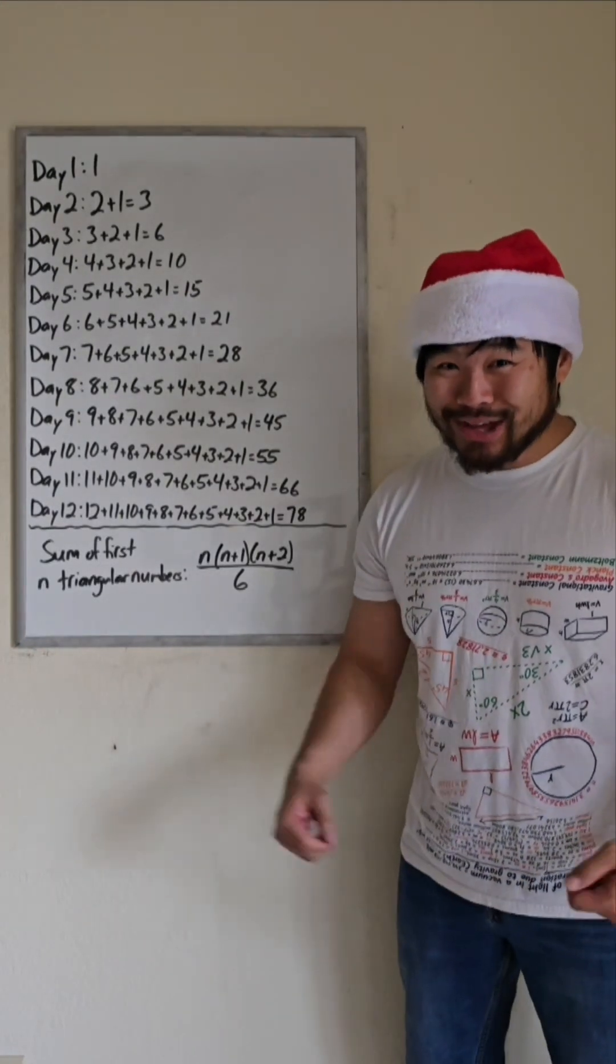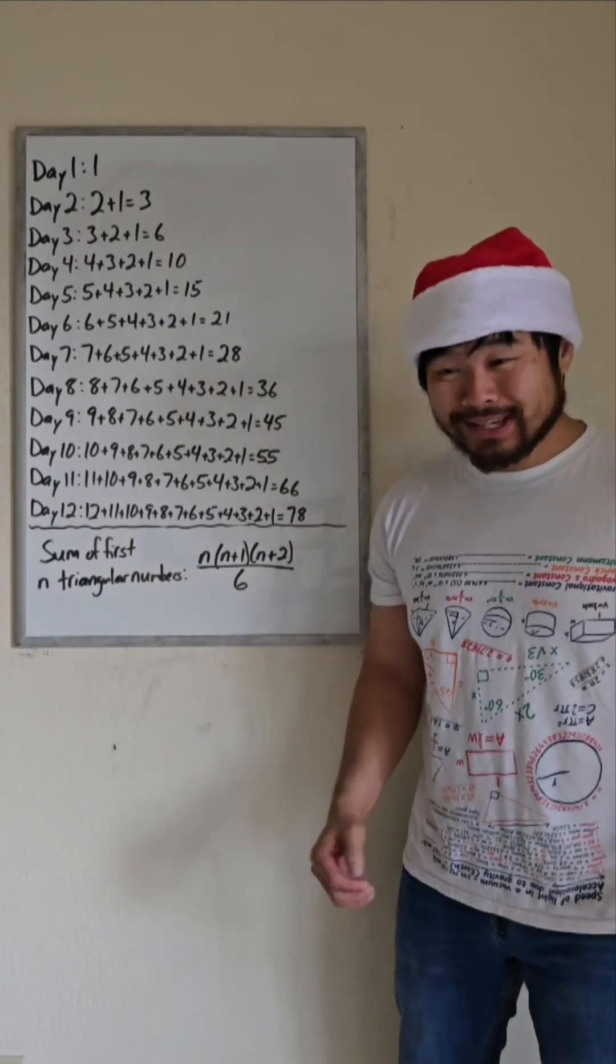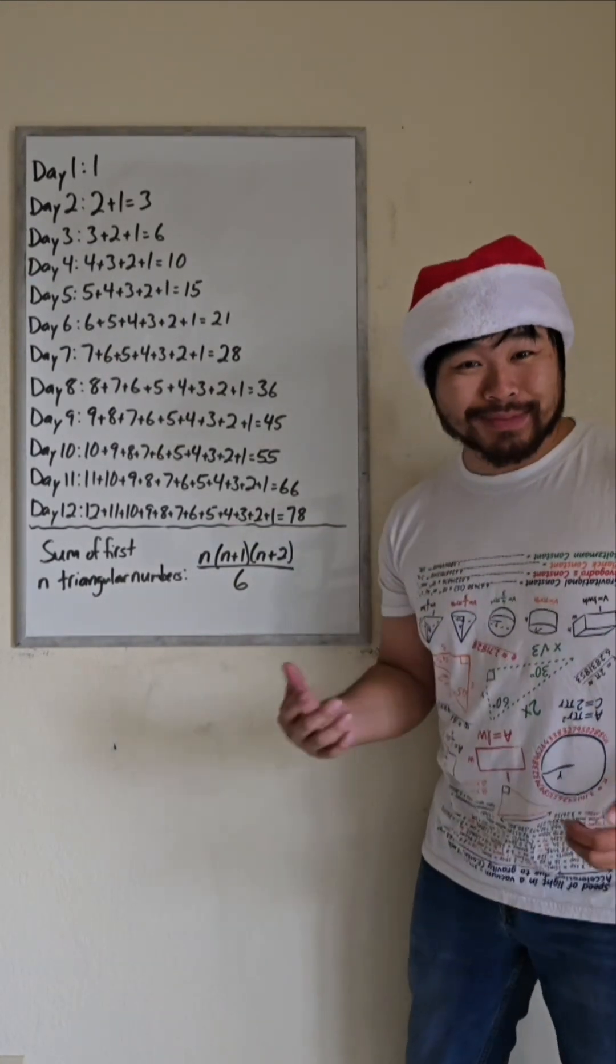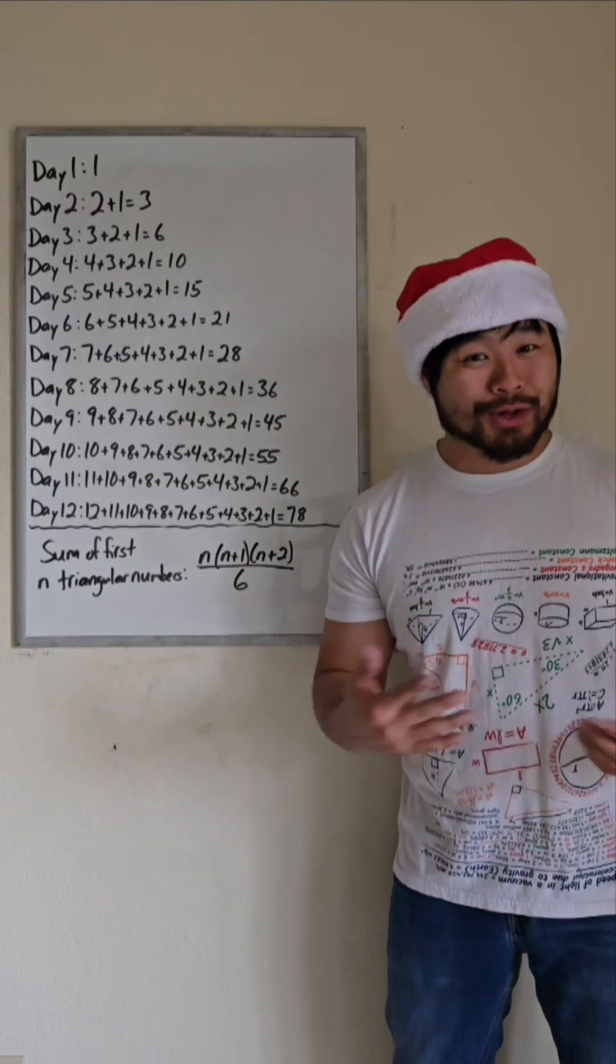And I can prove this in another video, but the sum of the first n triangular numbers is given through this: n times n plus 1 times n plus 2 all over 6.